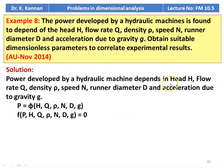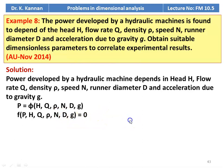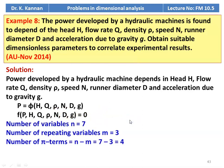The power developed by the hydraulic machine depends on head h, flow rate q, density rho, speed n, runner diameter d, and acceleration due to gravity g. We write the functional expression: power p is a function of h, q, rho, n, d, and g. There are 7 variables and 3 repeating variables. The number of pi terms are n minus m equal to 7 minus 3 equal to 4.